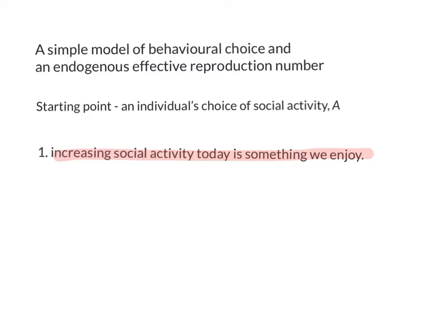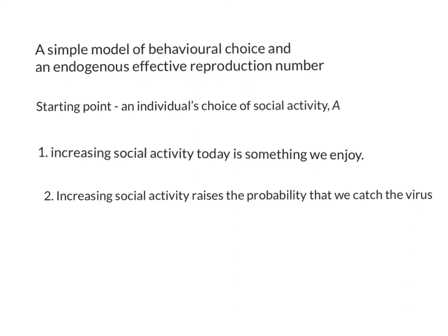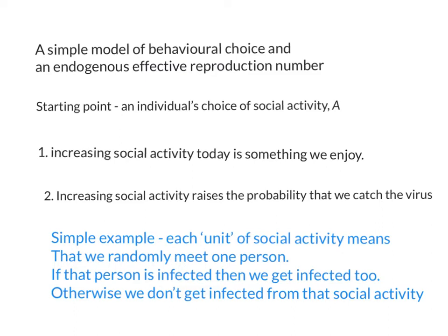We like interacting with other people — going out to bars, restaurants, cinemas, concerts and so on. If there wasn't a pandemic, we would have an optimal level of social activity. But the pandemic raises the costs of that social activity. The second element is simply that increasing social activity raises the probability that we catch the virus, and that leads to a loss in the future — we prefer to stay well tomorrow rather than catch Covid-19 and be sick. For example, suppose one unit of social activity means we randomly bump into one person. If that person is infected, they pass it on to us and we get Covid-19; otherwise we don't get infected from that unit of social activity.